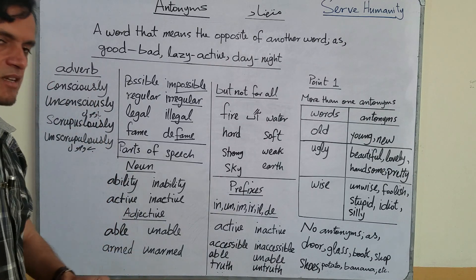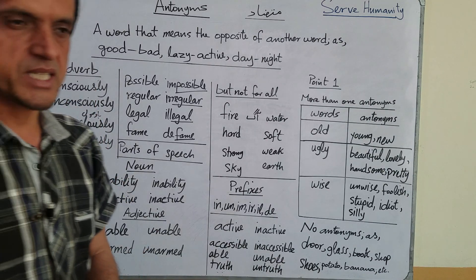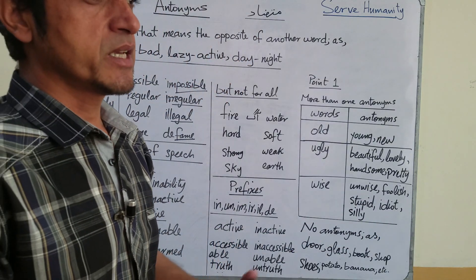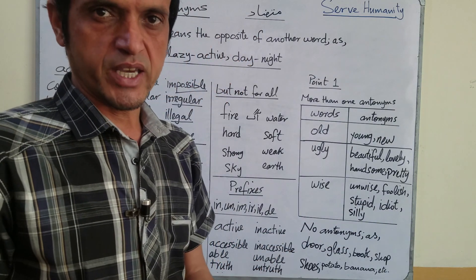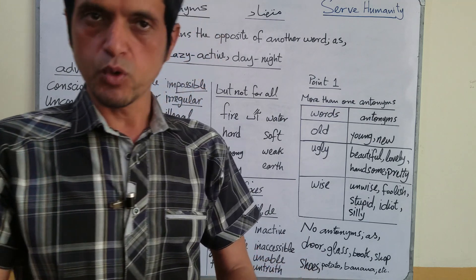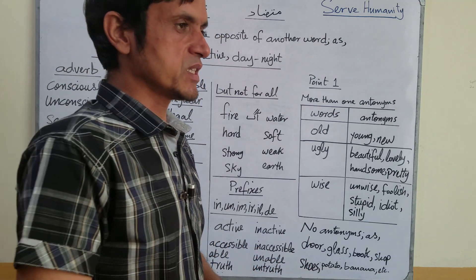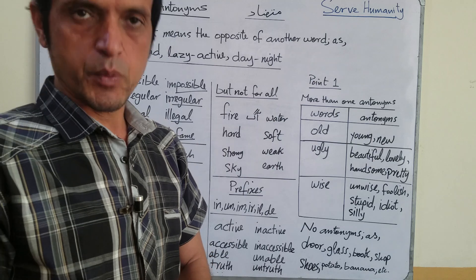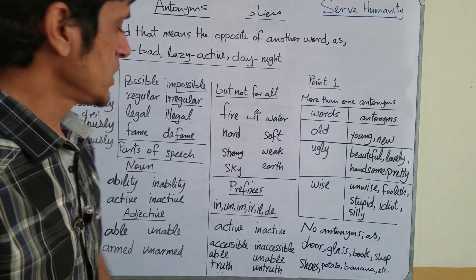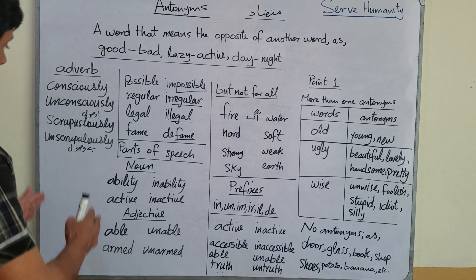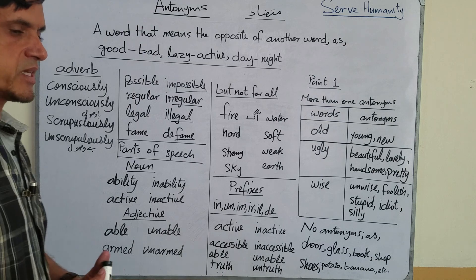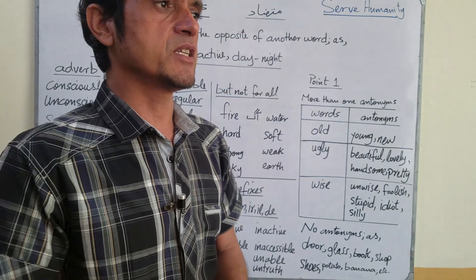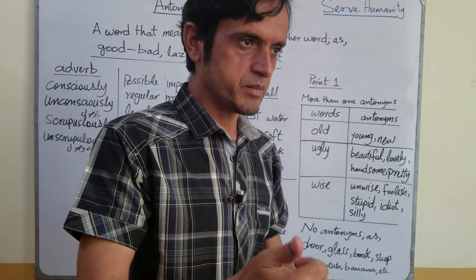So we can form antonyms in adverbs, and similarly in verbs as well. For example, we have verbs with antonyms: 'laugh' — its antonym is 'weep.' Similarly, 'sleep' — its antonym is 'awaken' or 'awake.' So we can form antonyms in verbs as well. And in pronouns — for example, 'she' — its antonym is 'he.'